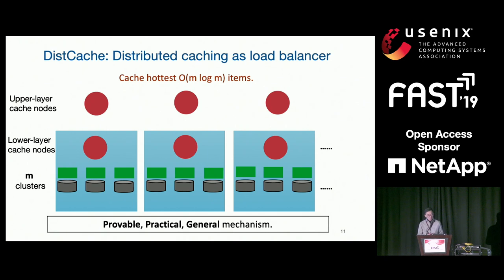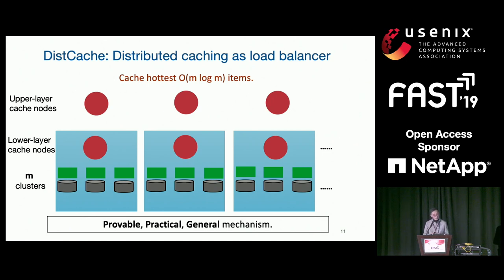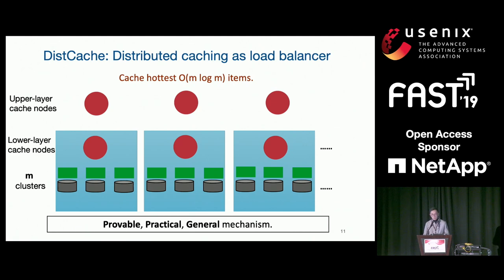The idea is that you do not need a big front-end cache. You can split that front-end cache into a number of smaller cache nodes, as long as the aggregate bandwidth equals the big one. For simplicity, I split the big node into M cache nodes in an upper layer, and the lower layer has cache nodes for each cluster — so you have two layers. Our solution is provable, practical, and general: provable means we have theoretical guarantees to fulfill any query distribution; practical and general means it has very simple primitives and can be applied to multiple deployment scenarios.